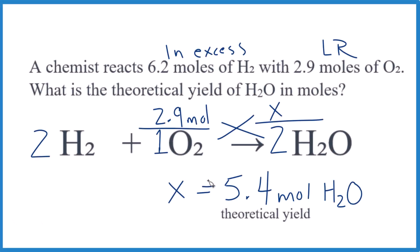In the last problem, we figured out the theoretical yield. That's the maximum amount of product we can make. So we had two reactants, we found the limiting reactant, and then we worked from there.